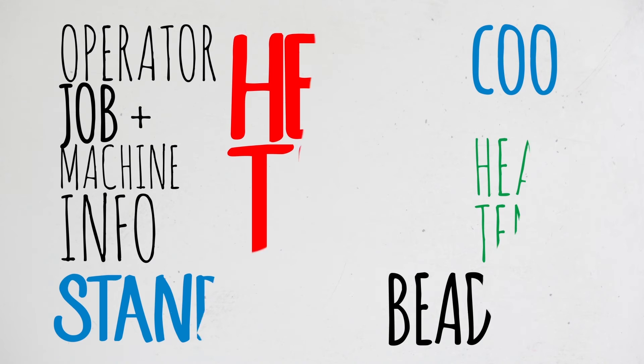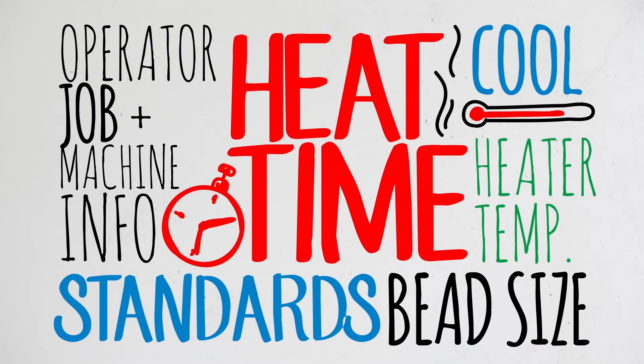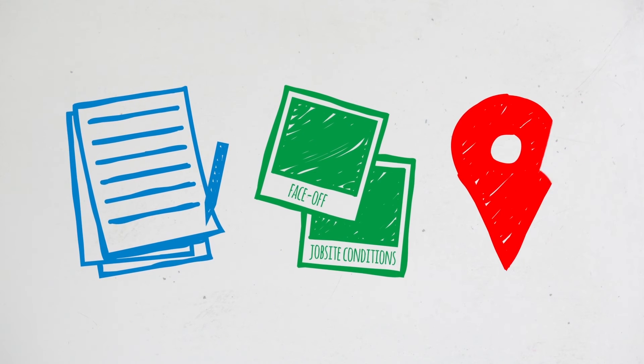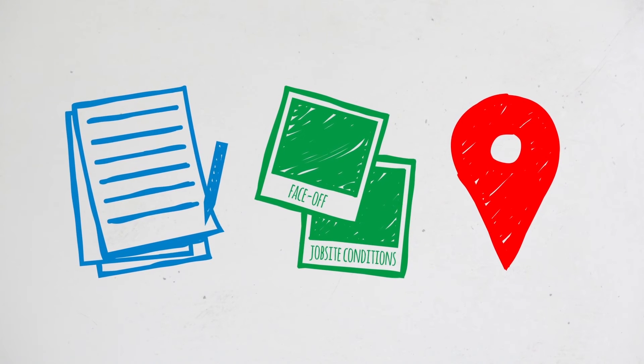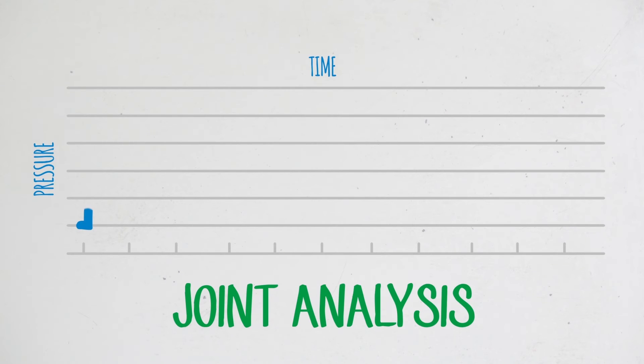View all parameters of the fusion joint plus notes, photos, GPS coordinates, and more, all from the safe and secure Data Logger Vault website. Information gathered from your joint reports can be used to validate the fusions completed on your job.